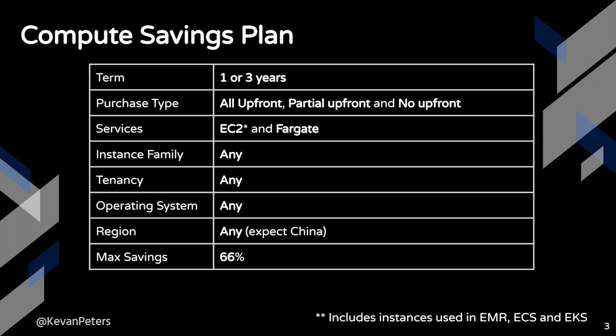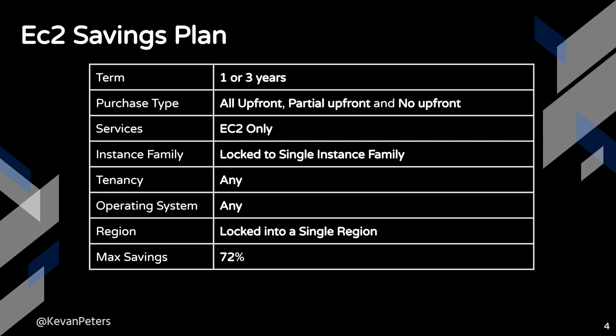The first one is much more flexible — it's a compute savings plan. You still have to lock into a one or three year term and pick a purchase type of all up front, partial up front, or no up front. But for services, this applies to any EC2 instance and things that run on EC2 instances, and Fargate. It's any instance family, any tenancy — shared or dedicated — any operating system, Windows or Linux. It's any region as well, except mainland China, and you can get a max savings of about 66%.